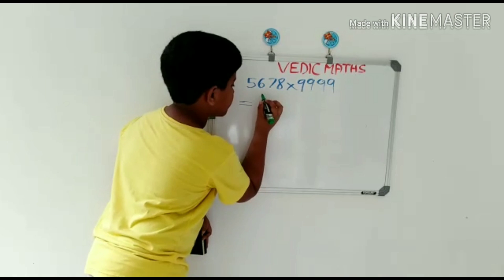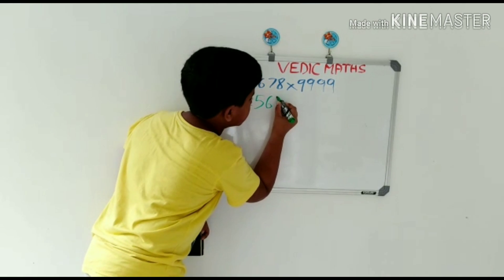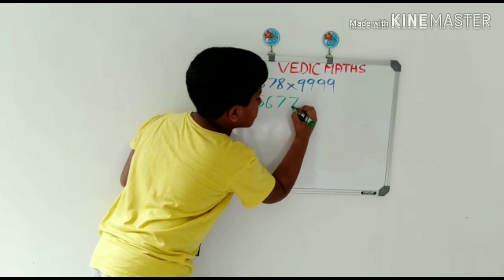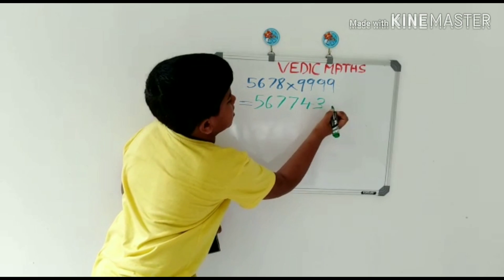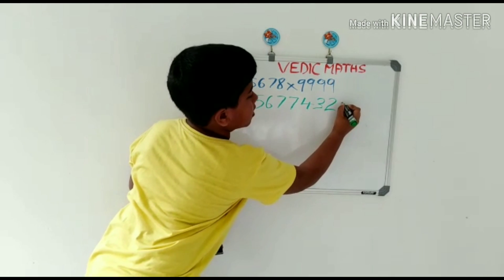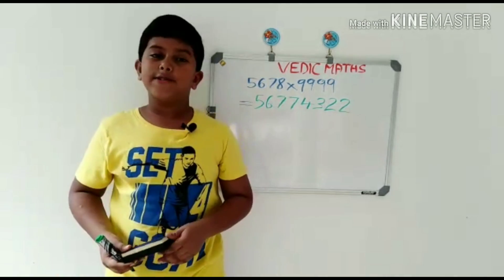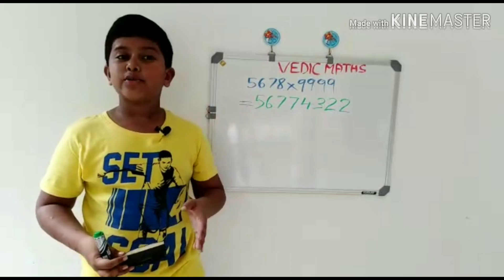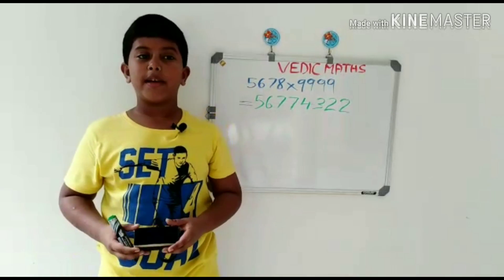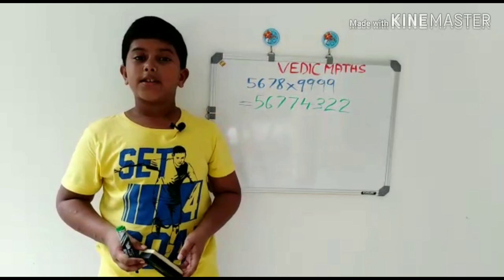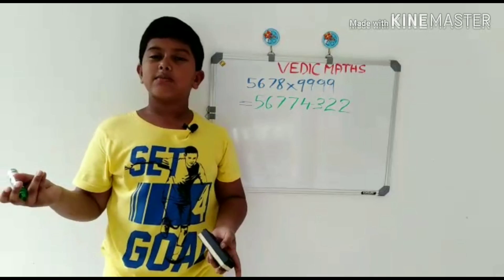Here's the answer. You might be confused how I did this so fast. Actually, there's a method of Vedic Math to do this very easily. If you know this method, you can also do it very fast. So now let's start from the small digits.